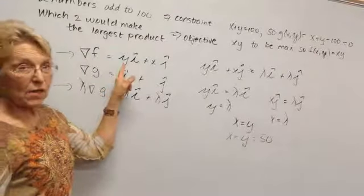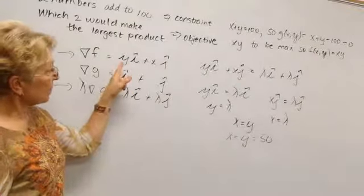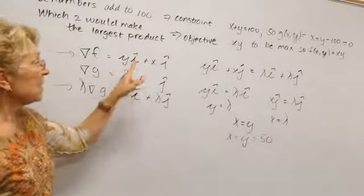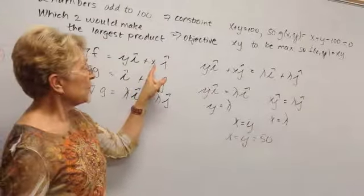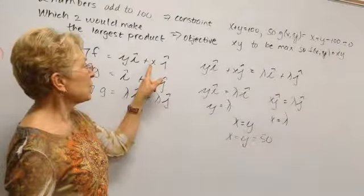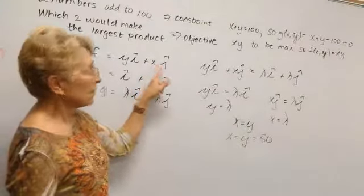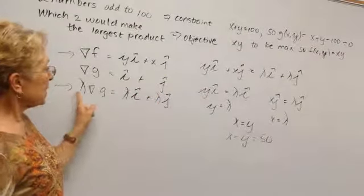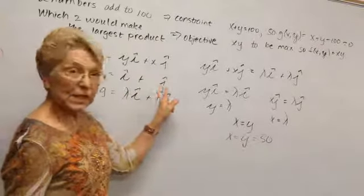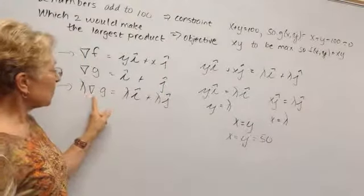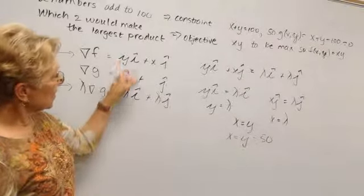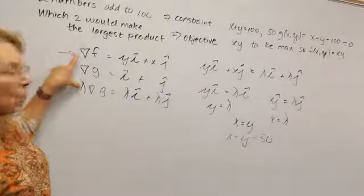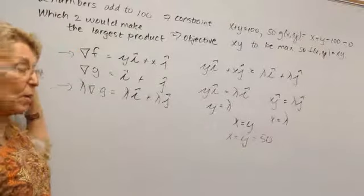Remember that gradients are just the function's derivative with respect to x in front of the i component, the function's partial derivative with respect to y in front of the j component, likewise for g. And then once we get this gradient for g, we're going to multiply by lambda. And so we ended up with three equations, two of which we're going to equate because that's our premise.